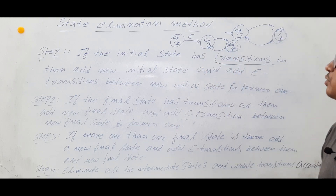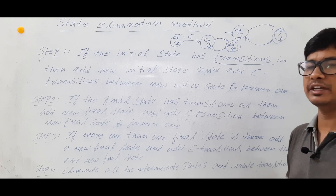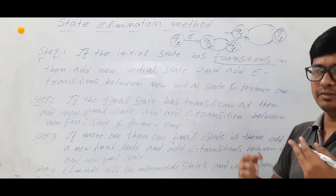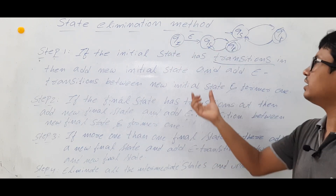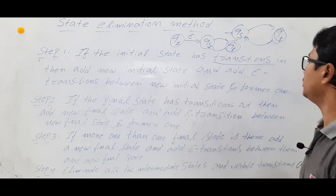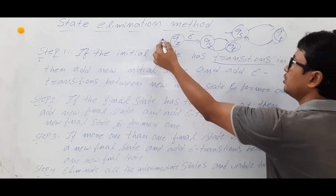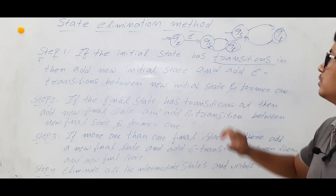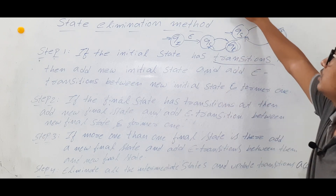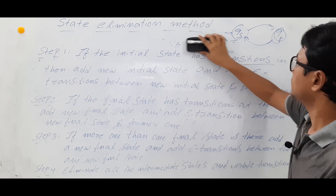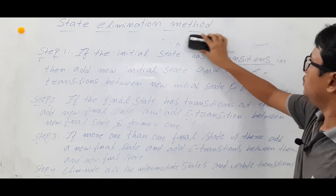So that is what step one is saying: if your initial state has an incoming edge, then add a new initial state which is a dummy one, and add an epsilon transition between the new initial state and the former one. So now your new initial state is qi.